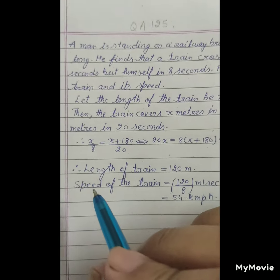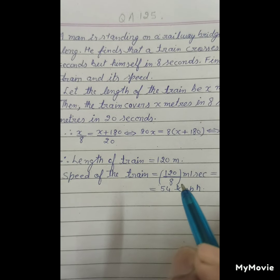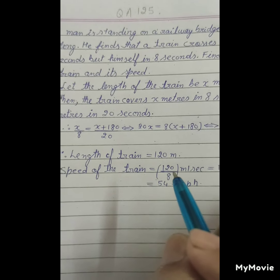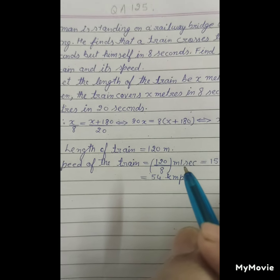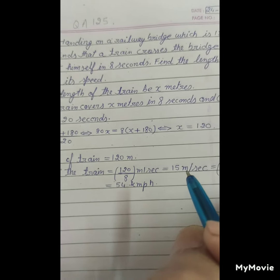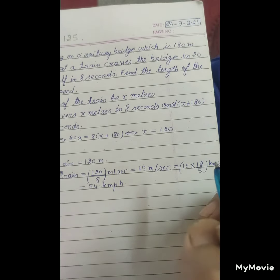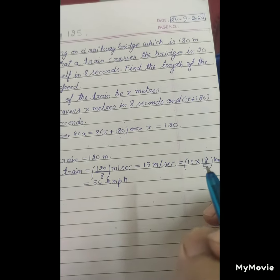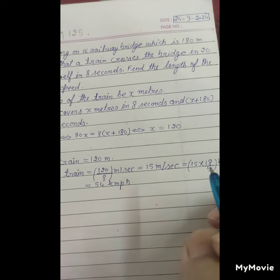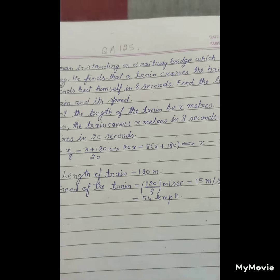Speed of the train is length upon time: 120 meters upon 8 seconds equals 15 meters per second. Converting meters per second into kilometers per hour by multiplying 18 by 5, so 15 into 18 by 5 equals 54 kilometers per hour.